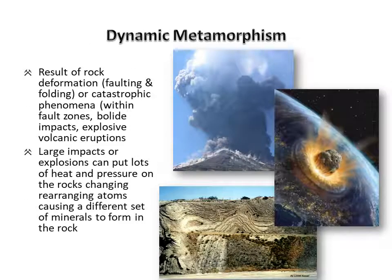The fourth kind of metamorphism is dynamic metamorphism. Dynamic metamorphism happens when rocks are faulted and folded, or from catastrophic events such as movements along fault zones that shear the rocks, bolide impacts that crush and heat the rocks, and explosive volcanic eruptions, which would introduce heat from the magma and lots of pressure from the explosion.